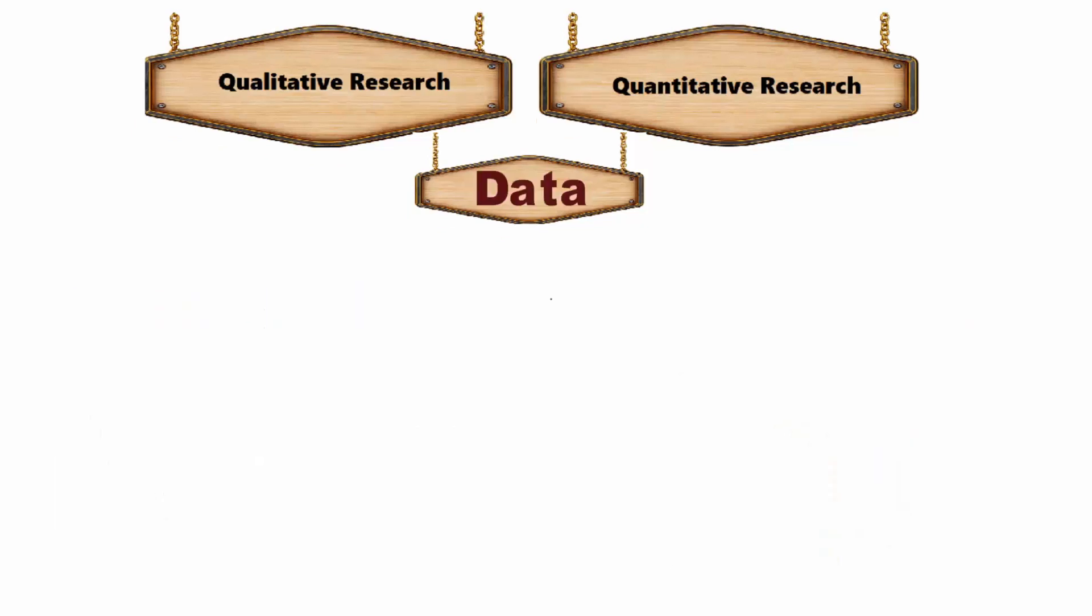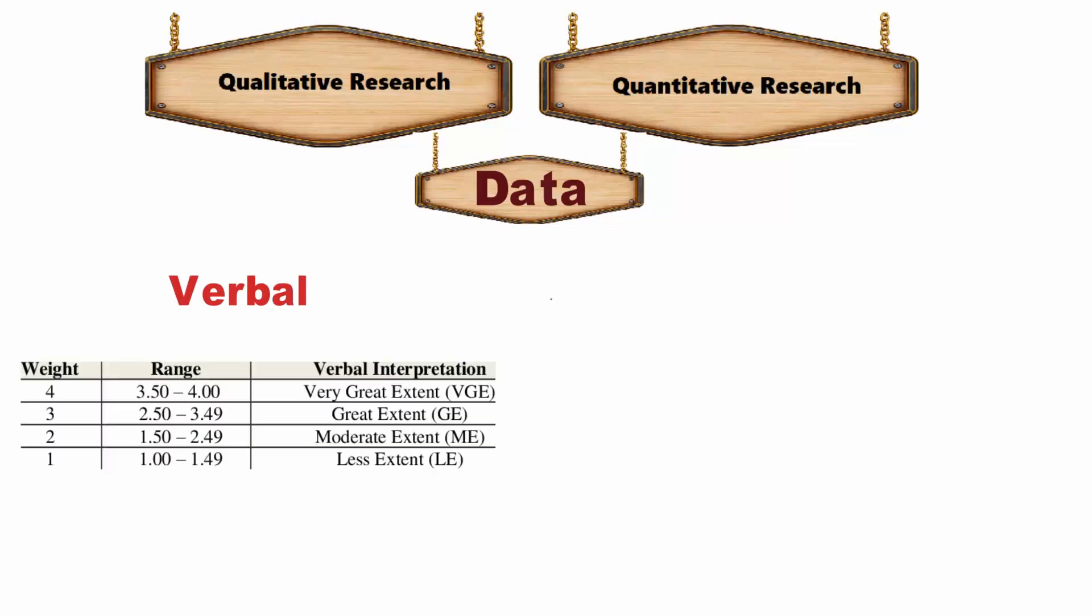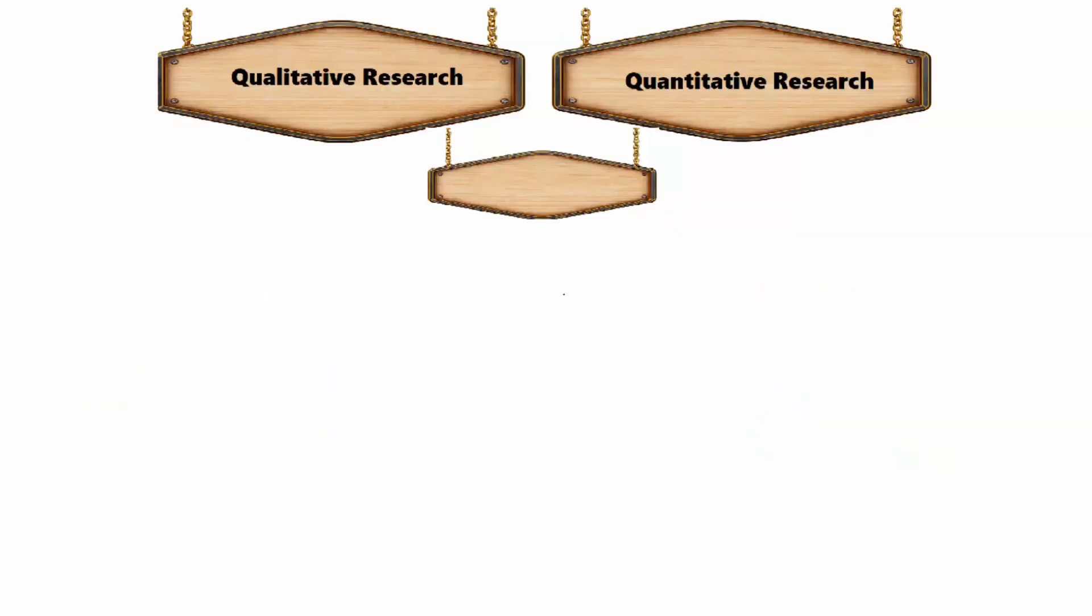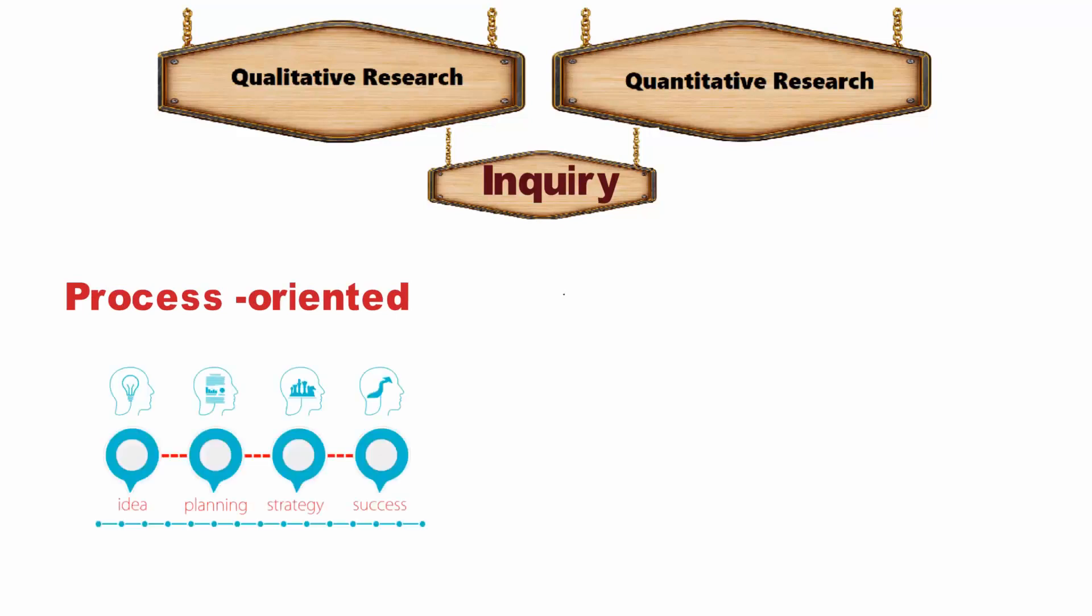Seven, data: verbal data are collected in qualitative research. Conversely, in quantitative research measurable data is gathered. Eight, inquiry: inquiry in qualitative research is process-oriented, which is not in the case of quantitative research.